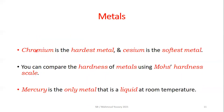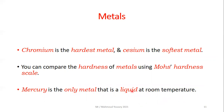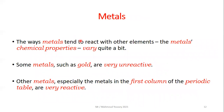Other metals vary in hardness: chromium is the hardest metal, while cesium is the softest metal. You can compare the hardness of metals using the Mohs hardness scale. Mercury is the only metal that is liquid at room temperature — it is the metal used in thermometers.